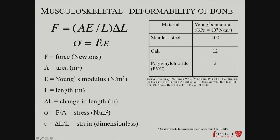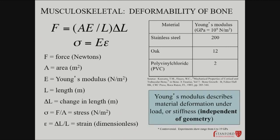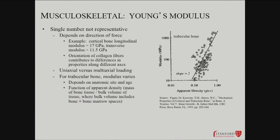Different materials have different Young's moduli: stainless steel is about 200 GPa, oak about 12, polyvinyl chloride pipes about 2. Cortical bone is actually about 17 gigapascals, while trabecular bone is much, much less. So right away, we can see this is going to relate to deformability and possibly to fracture, and the ratio of these two different components might be relevant.